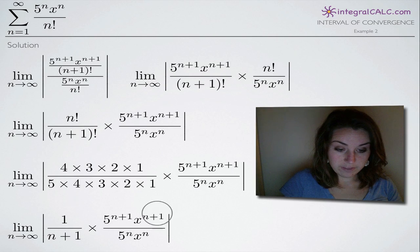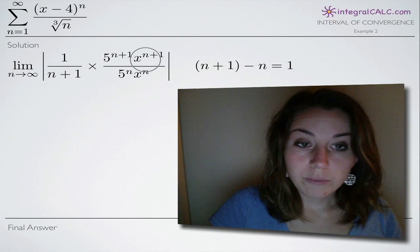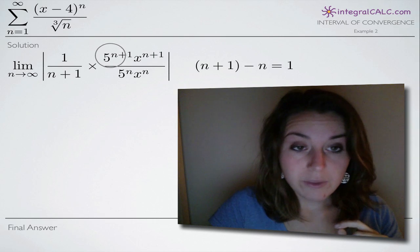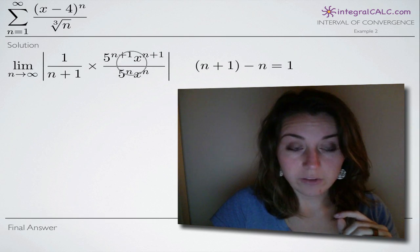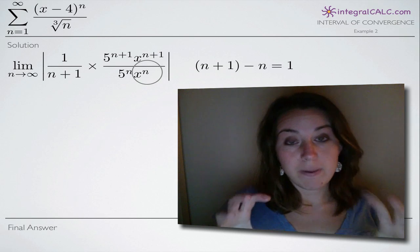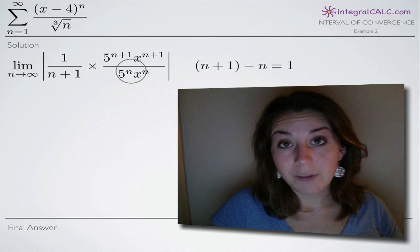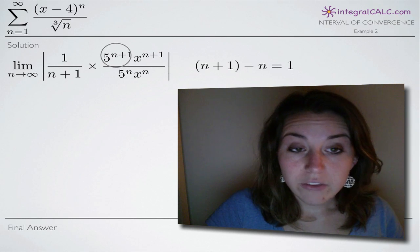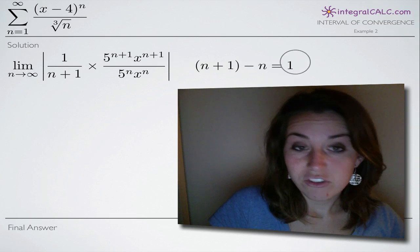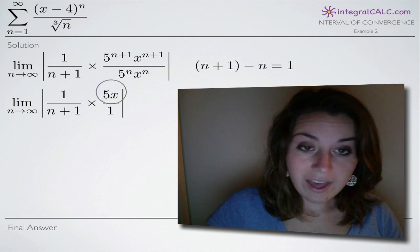Now we tackle the second fraction. When you have a fraction with the same base in both the numerator and denominator — here we have 5 raised to an exponent over 5 raised to an exponent, and x raised to an exponent over x raised to an exponent — you can subtract the denominator's exponent from the numerator's exponent. In our case, n plus 1 minus n equals 1, which means everything in our denominator cancels and we're just left with 5x in the numerator.